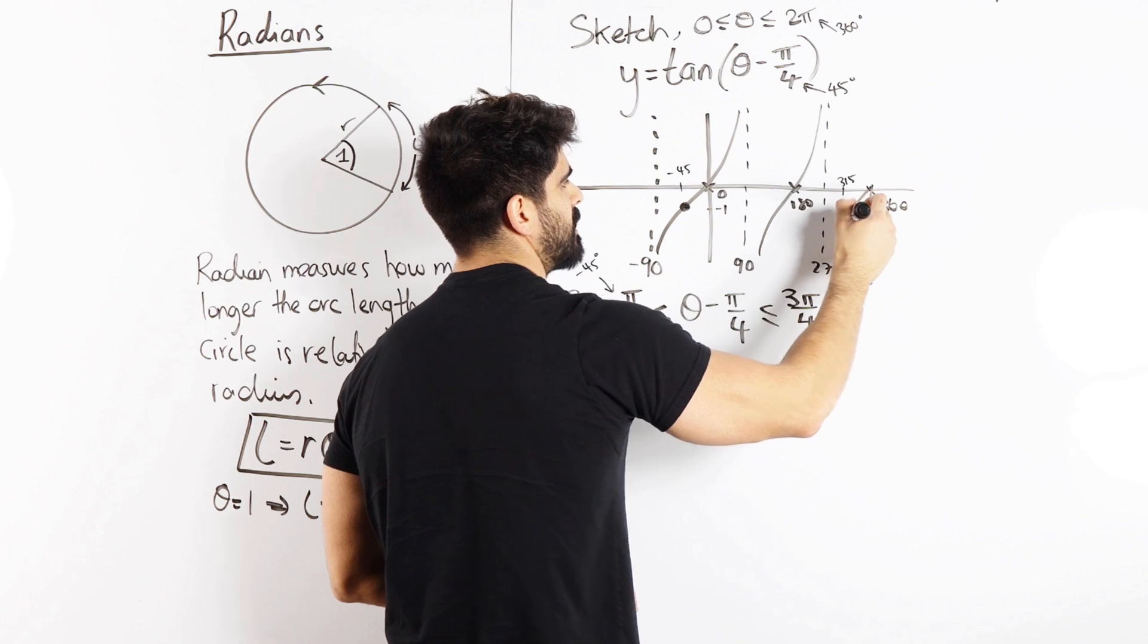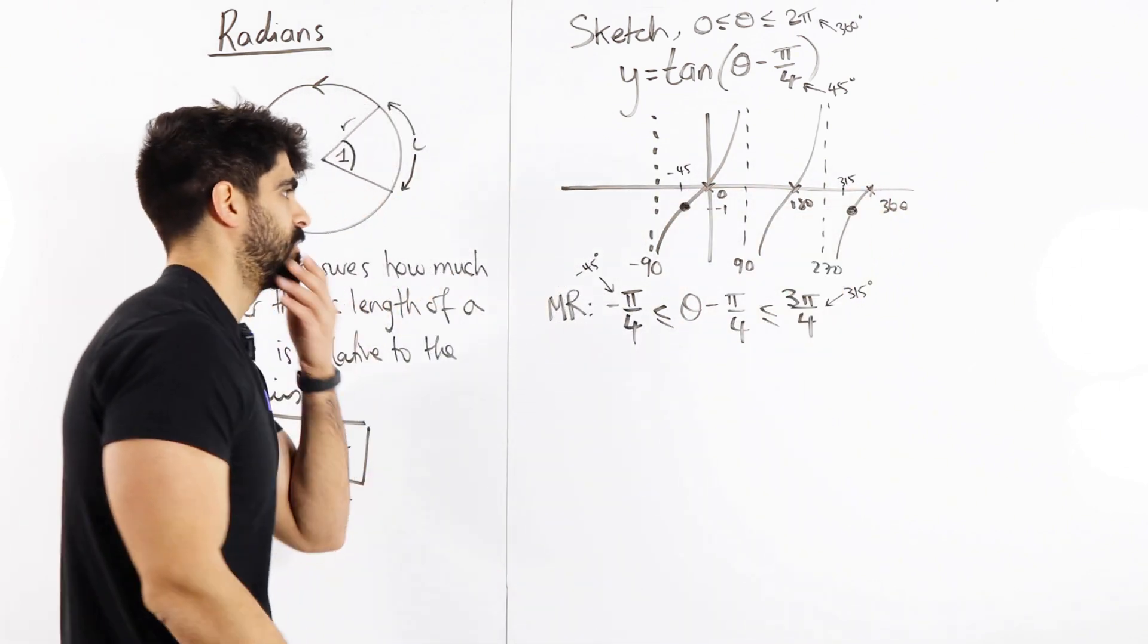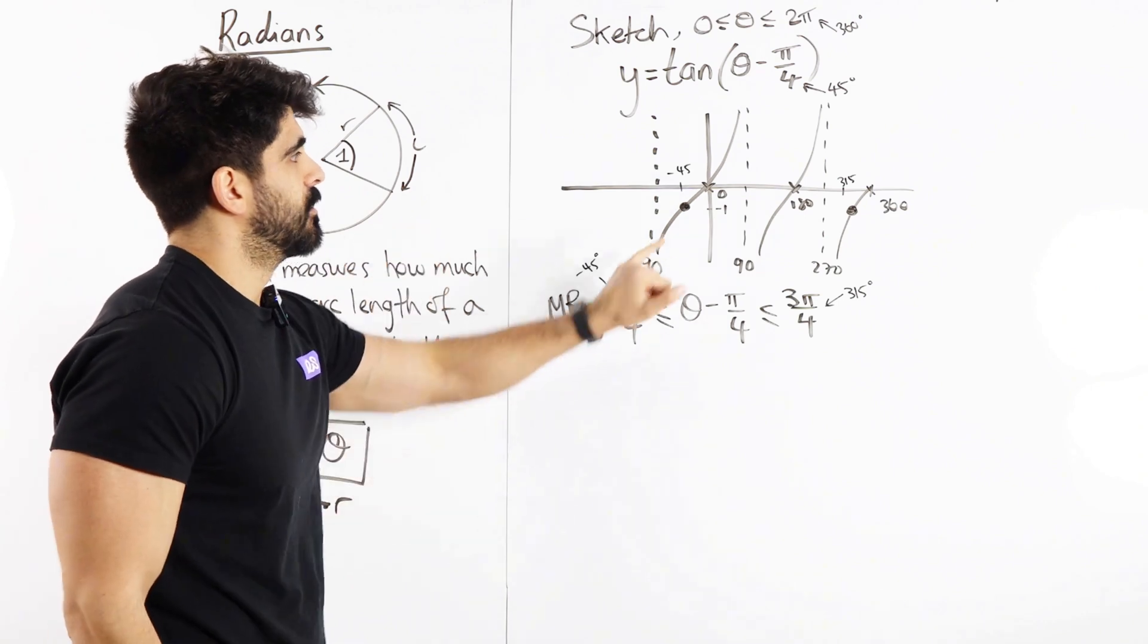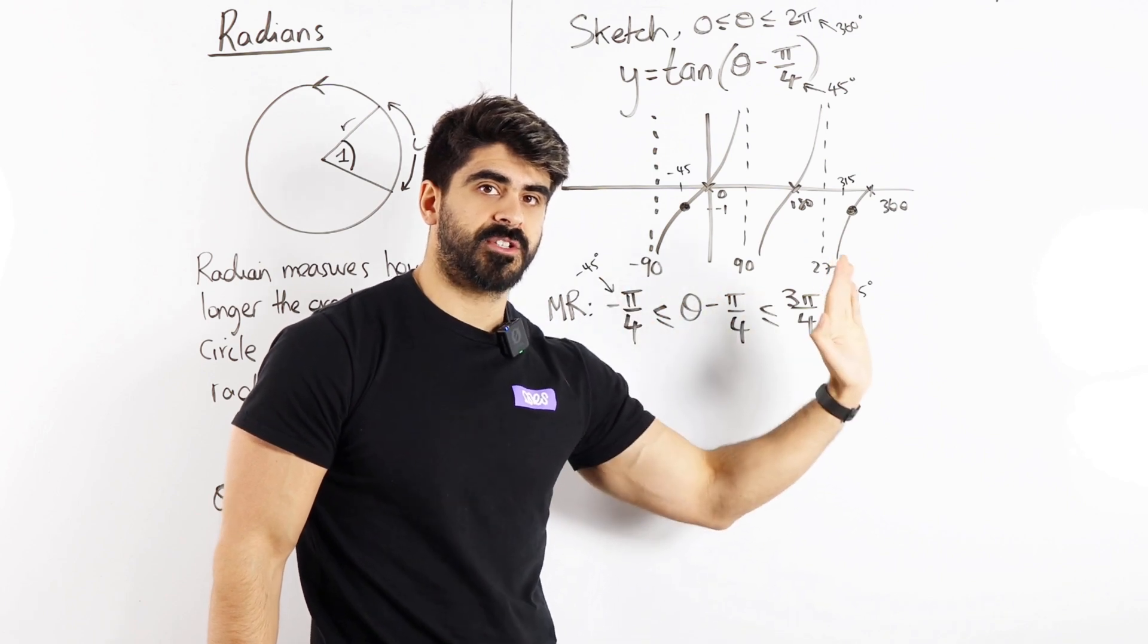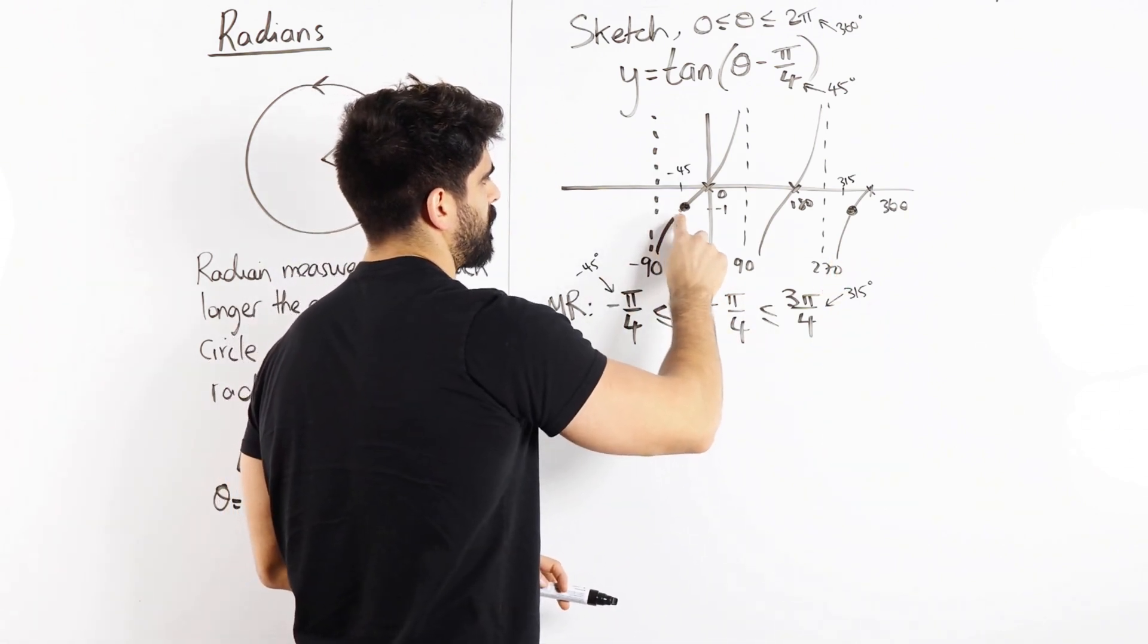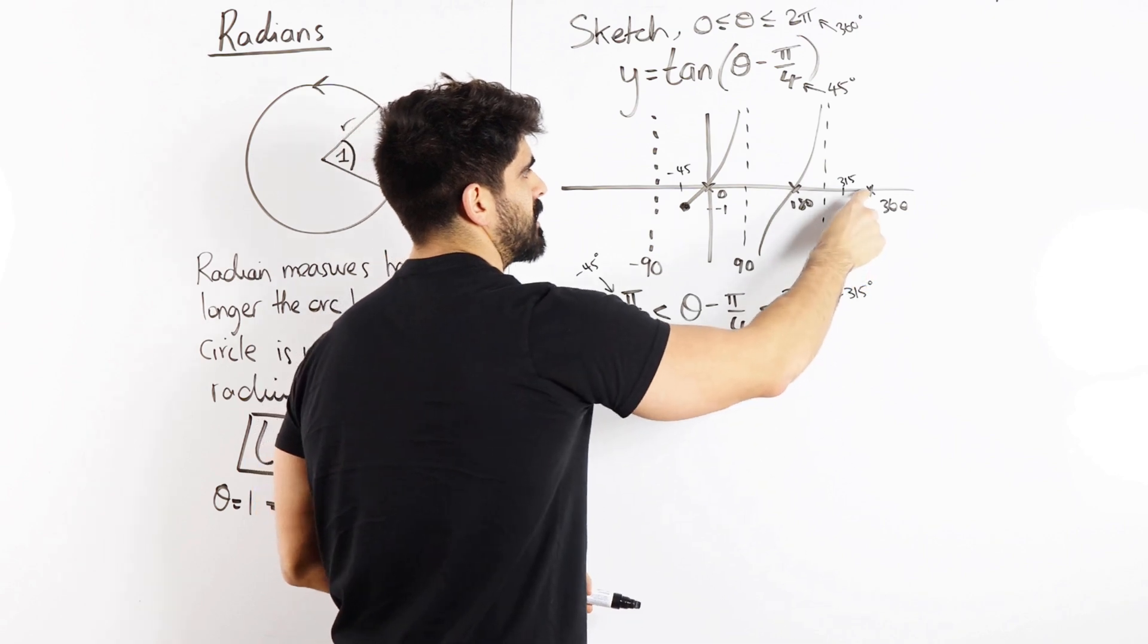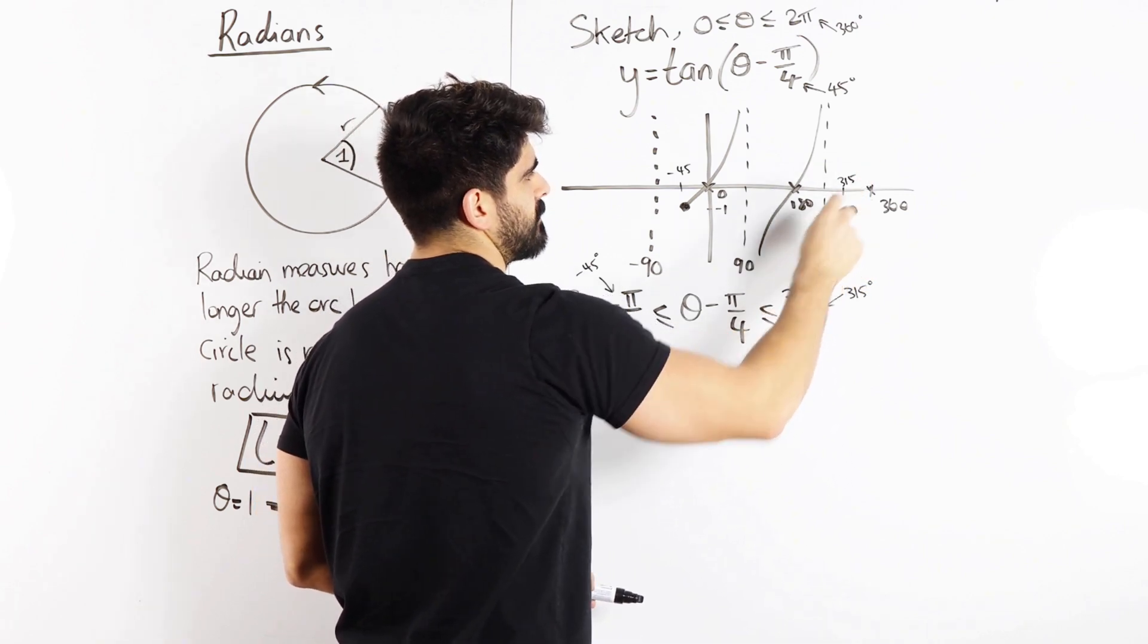45 is between the asymptote and 0 here. 315 is going to be between the asymptote and 360. Which means this point here is going to be in line with minus 45. So between these two points is what I want and I'm going to shift that to the right by pi over 4.